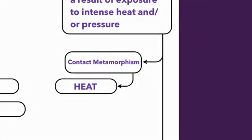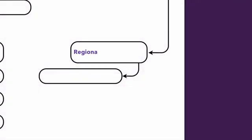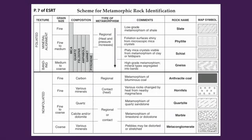Let's go back to our flowchart. Our second type of metamorphism is called regional metamorphism, and this is caused primarily by pressure. All of this is summarized in your reference tables on the metamorphic rock chart on page 7. You'll notice type of metamorphism, composition, what minerals are involved, how big the crystals are, whether it has banding or not, the names of the rock, and the map symbols. We'll learn lots more about this chart in detail in the coming days. Thanks for listening.